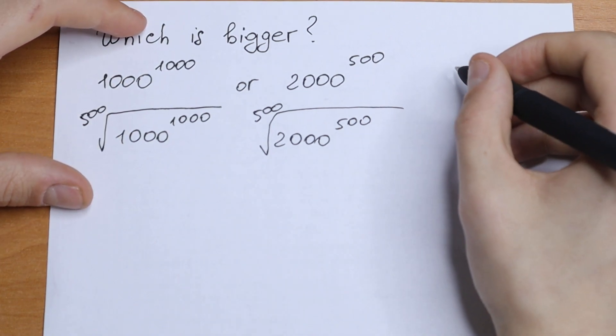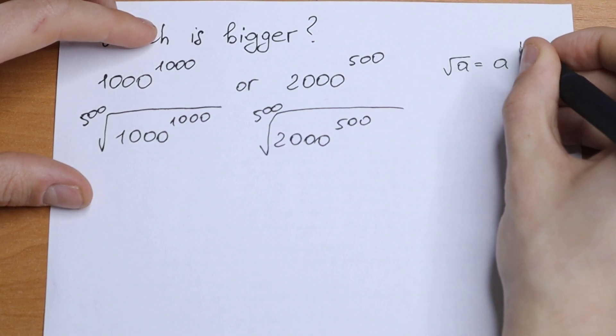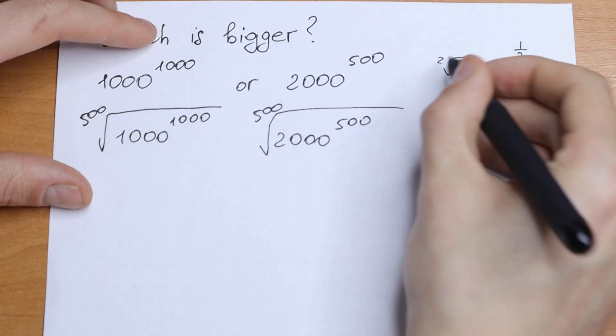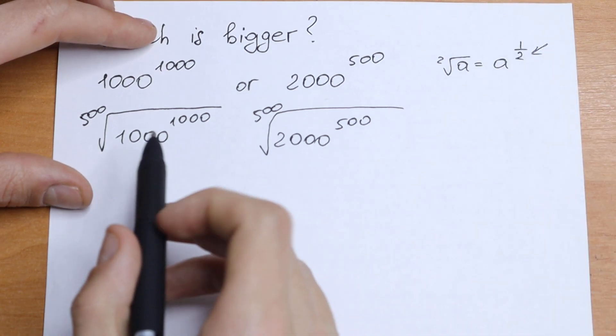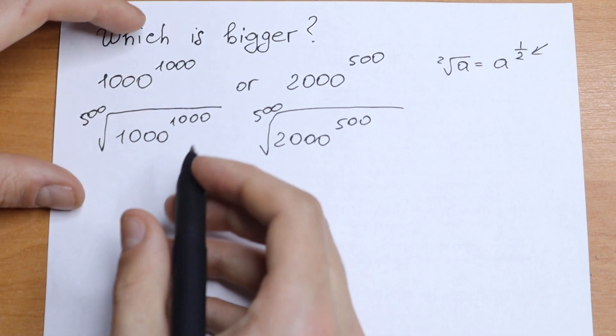How can we write it? We all know if we have for example a square root of a, we can write it as a to the power of one half. So these two jump right here.